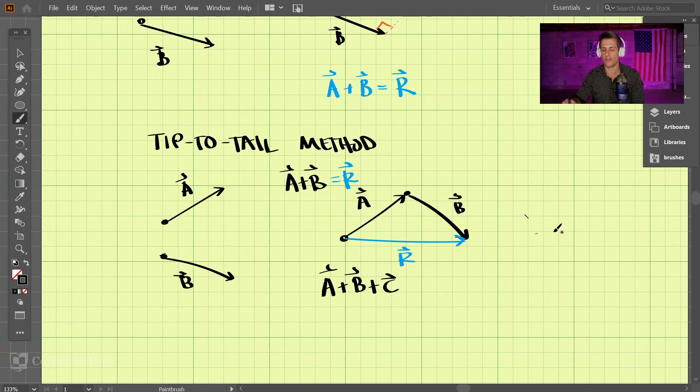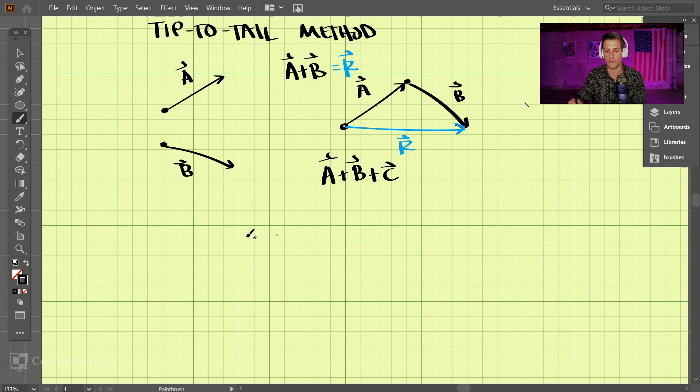So I've shown you graphical methods for adding vectors together. Let's say you're given Cartesian coordinates in terms of a vector. Let's say you're given two vectors. We have (5, 3, 1) is vector A, and vector B, let's say, is (2, 4, 1).